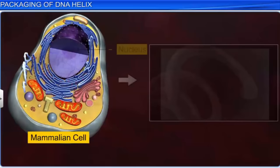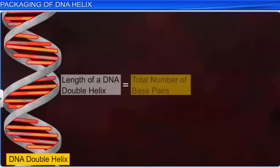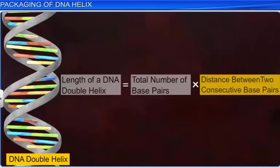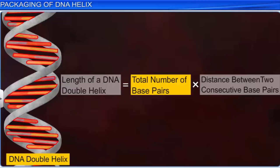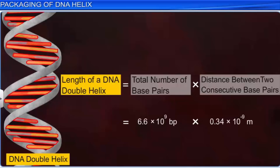Did you know that the length of a DNA double helix in a typical mammalian cell is about 2.2 meters? This length is obtained by multiplying the total number of base pairs present in the DNA double helix with the distance between two consecutive base pairs. The total number of base pairs in a typical mammalian cell is 6.6 × 10⁹, and the distance between two consecutive base pairs is 0.34 nanometers, or 0.34 × 10⁻⁹ meters. By multiplying these two factors, we get the length of the DNA double helix as 2.2 meters.